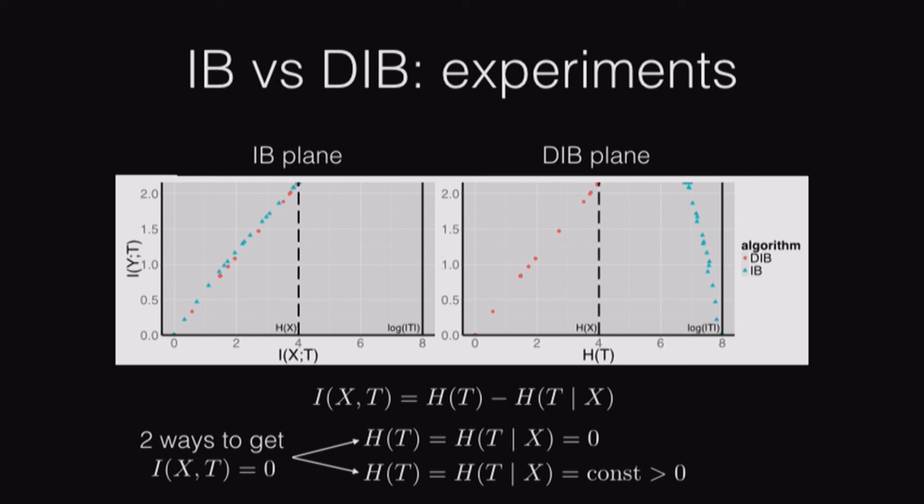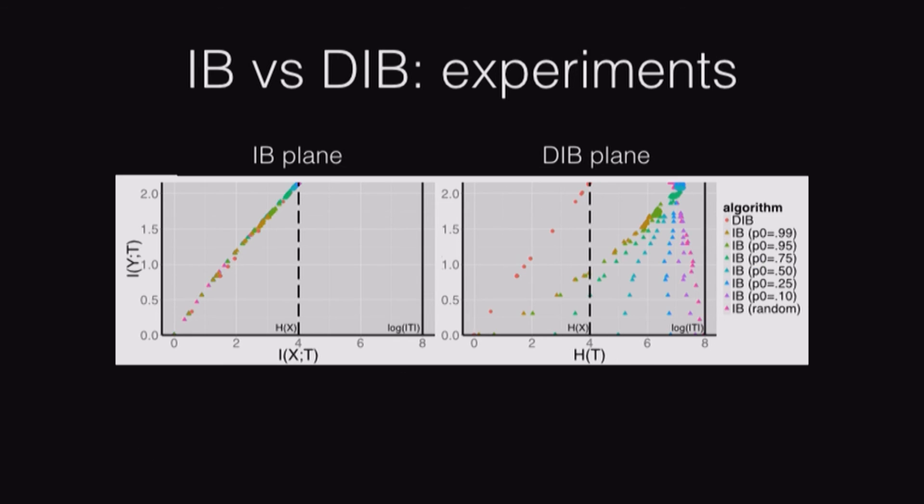We thought, what if we initialize the IB close to that other solution, where it's mapping all data points to the same cluster, and see if it can figure it out. These different clusters are just different peakinesses of that initialization. You can see that in the IB plane, nothing changes. Everything looks the same. In the DIB plane, as you encourage the IB to find those DIB optimal low entropy solutions, it figures it out a little bit, but it never quite performs as well as DIB.